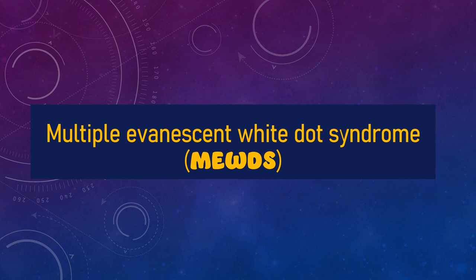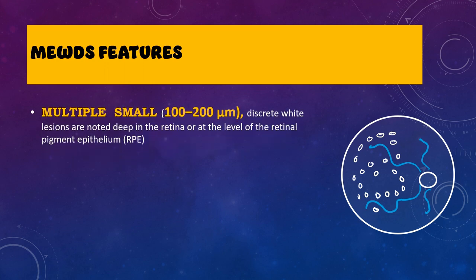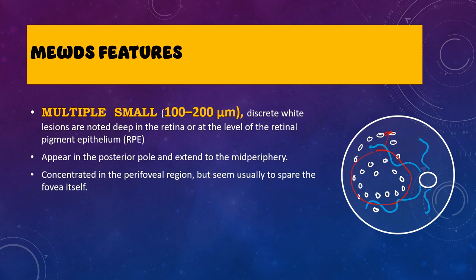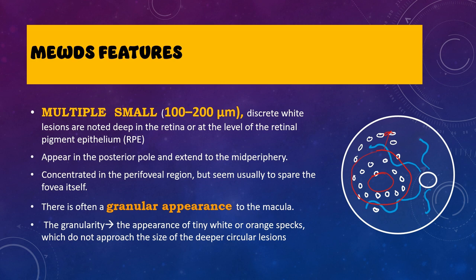Let us talk about the multiple evanescent white dot syndrome, also referred to as MEWDS. In MEWDS you will see multiple small — 100 to 200 micrometers — discrete whitish lesions located at a deeper level of the retina and the retinal pigment epithelium. These lesions start in the posterior segment and progress towards the mid-periphery. They can concentrate around the perifoveal region but spare the central foveal region. In the central foveal region you can see a granular appearance due to tiny white or orange specks, which are smaller than the lesions seen around the fovea and in the mid-periphery.